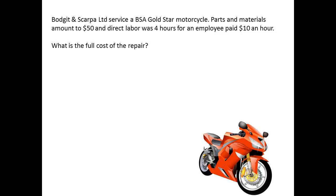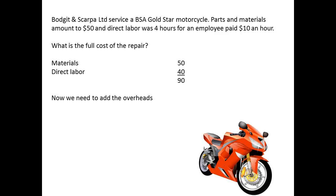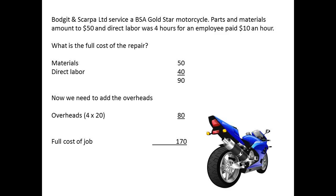Now let us apply this to a particular job. If parts and materials cost $50 and the mechanic is paid at $10 an hour for the 4 hours of work completed, then what is the full cost of the repair? We know the direct costs are the $50 for materials and 4 hours at $10 an hour, which is $40, making a total of $90 for the direct costs. We determined that overheads were to be charged at $20 per hour, so that we must add 4 hours of overhead charges, which is $80. That makes the full cost of the repair equal to $170.